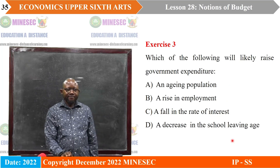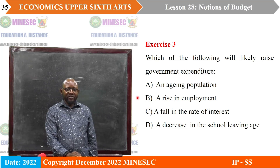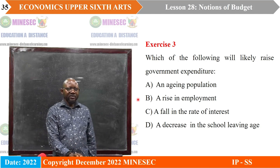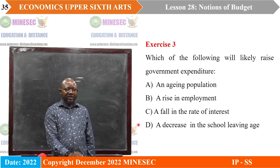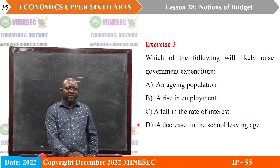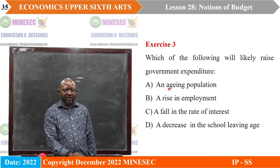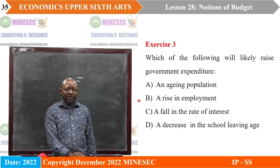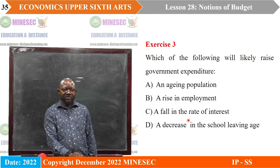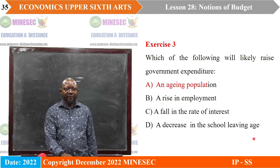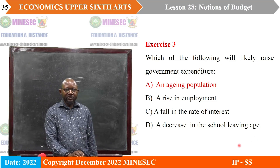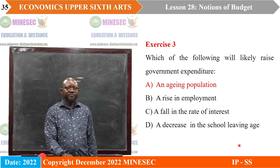Next exercise: which of the following would likely raise government expenditure? A. An aging population. B. A rise in employment. C. A fall in the rate of interest. D. A decrease in the school leaving age. An aging population would be a burden to the government — the correct answer is A. The expenditure will increase because we need to pay pensions, take care of old people's homes and so forth. At the same time, less taxes are going to be generated.